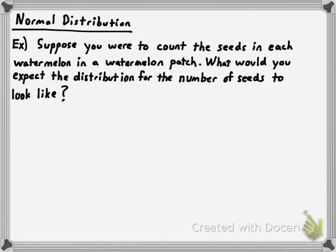Wouldn't you expect that most watermelons would have close to the mean number of seeds? I'm going to draw a histogram for a distribution — just making it up — but I think intuitively it'll make sense to you why it would probably look like this.